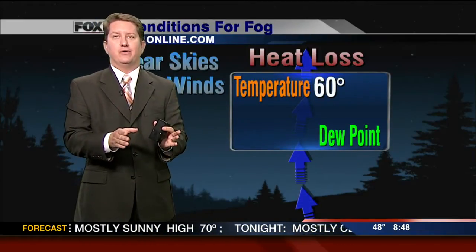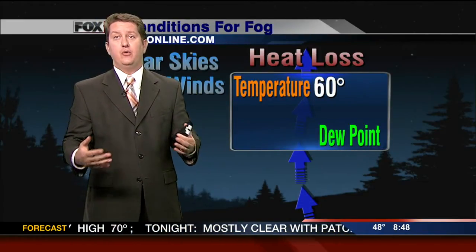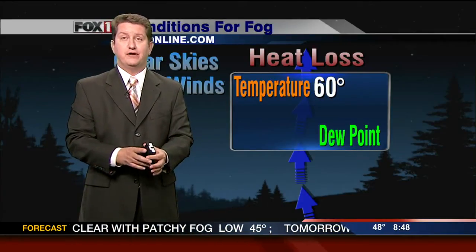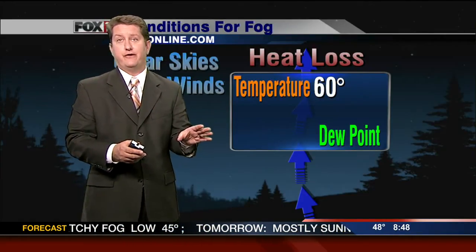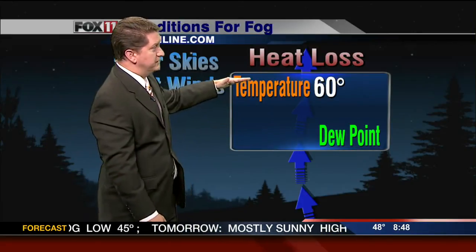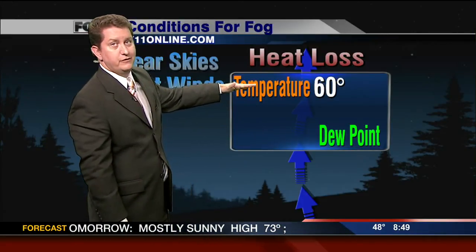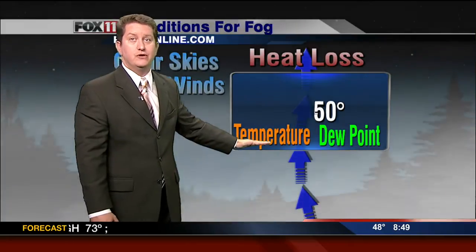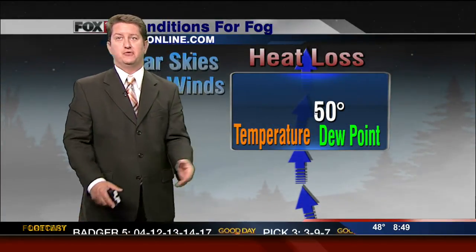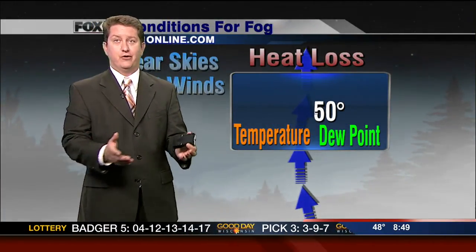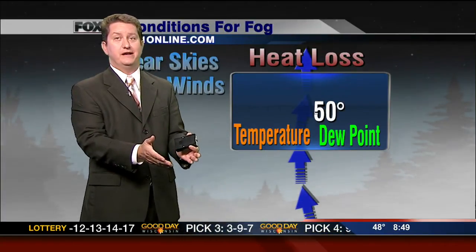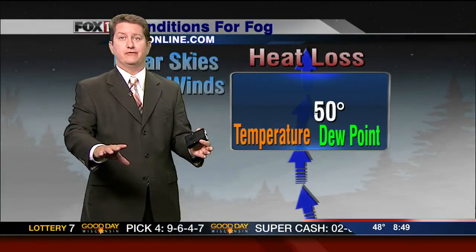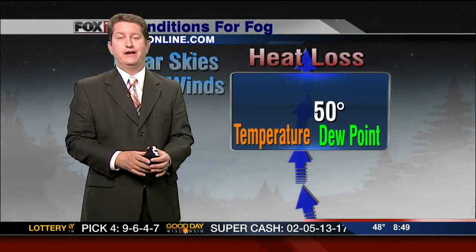I'm going to use the dew point word once again. Usually we use that with how comfortable or humid it is outside, but the dew point is also a good factor for figuring out fog. So if our temperature is 60 degrees to start off with — let's say it's the evening — and then overnight the temperature drops to equal the dew point, let's say 50 degrees, then you have fog form. That is essentially 100 percent humidity, and a fog or cloud is basically right on the ground. That's why we have our fog out today.